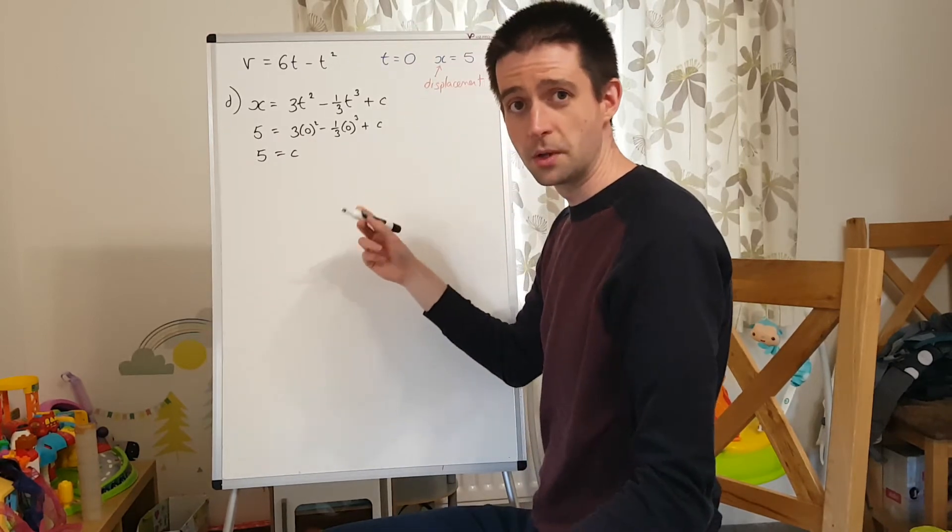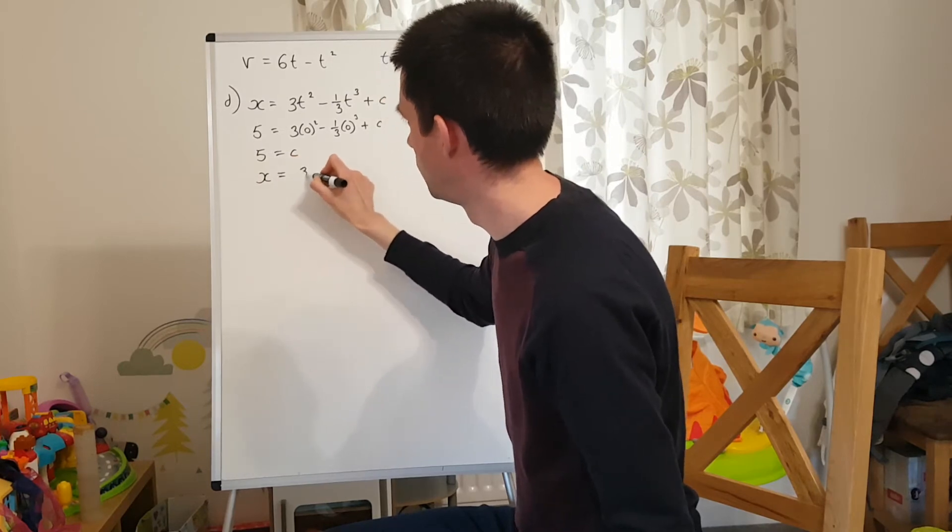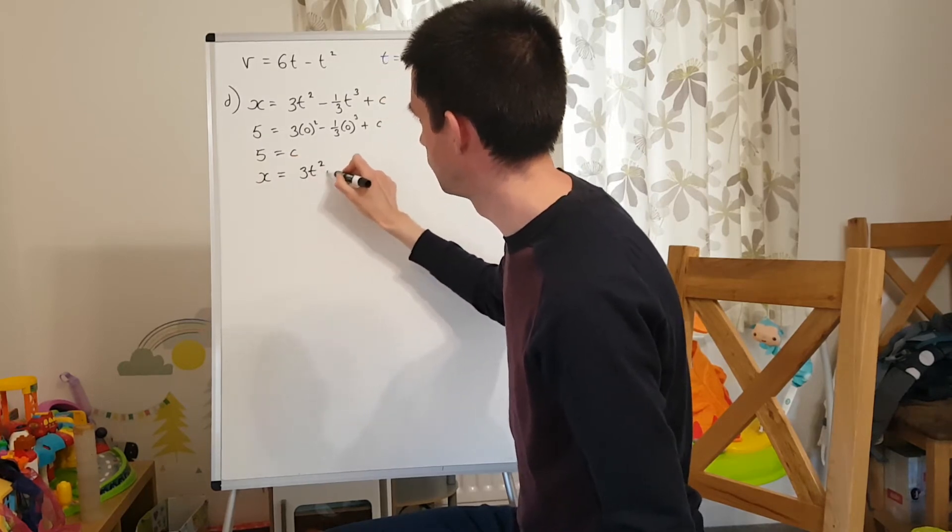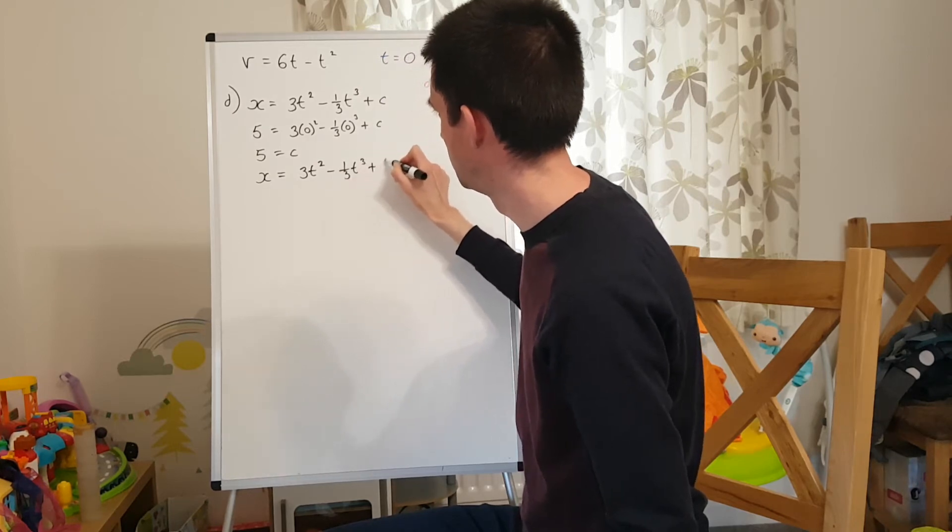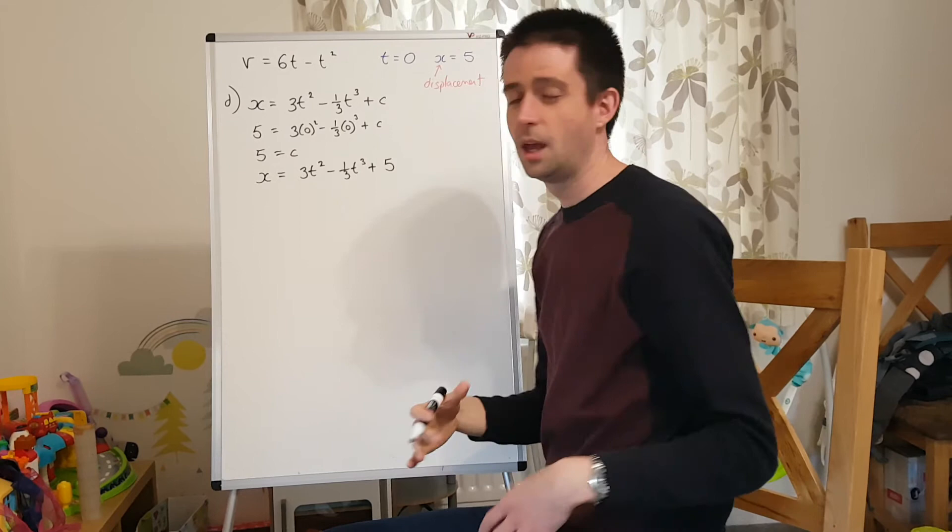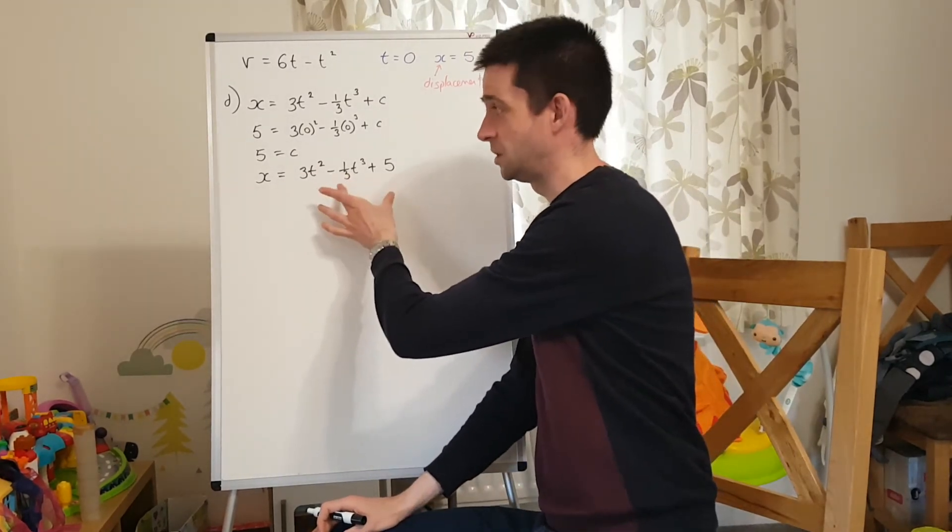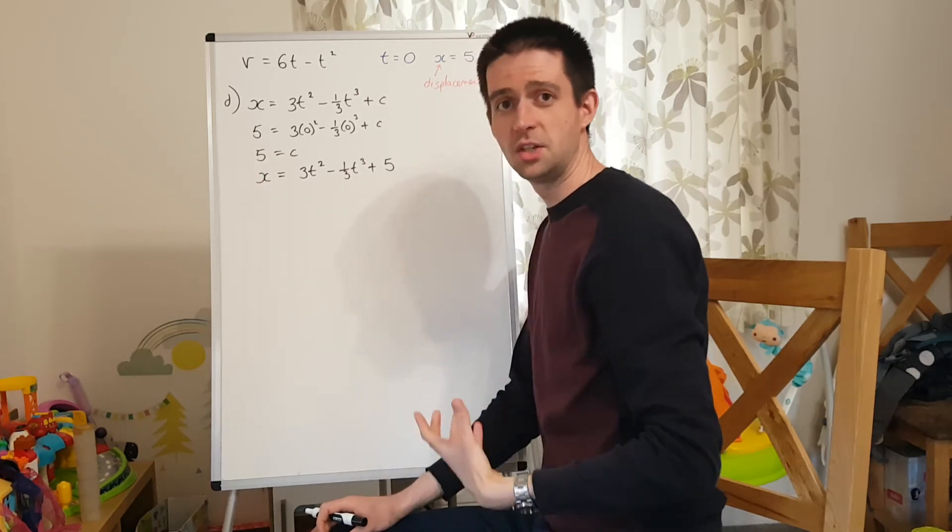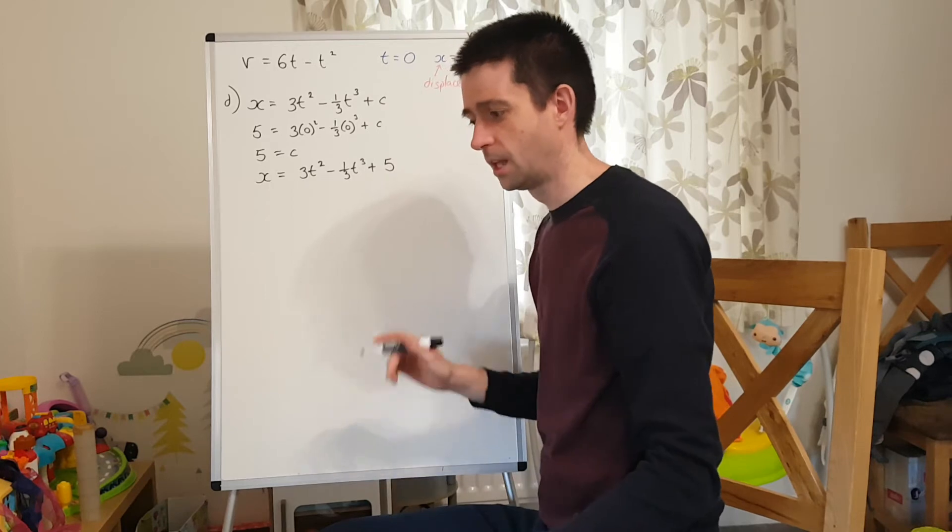Now that's not my answer. My answer is my expression for displacement. Therefore, I need to write that x is 3t squared minus 1 third t cubed plus 5. And what that tells me is if I know a value for t and I substitute it into this expression, it's going to tell me the distance from O at that point in time.